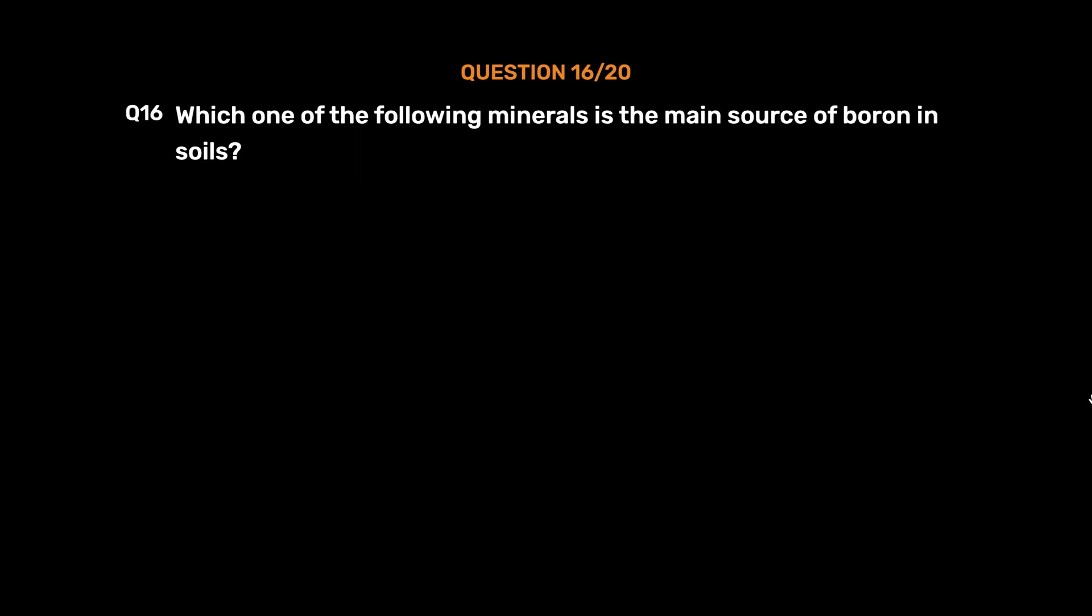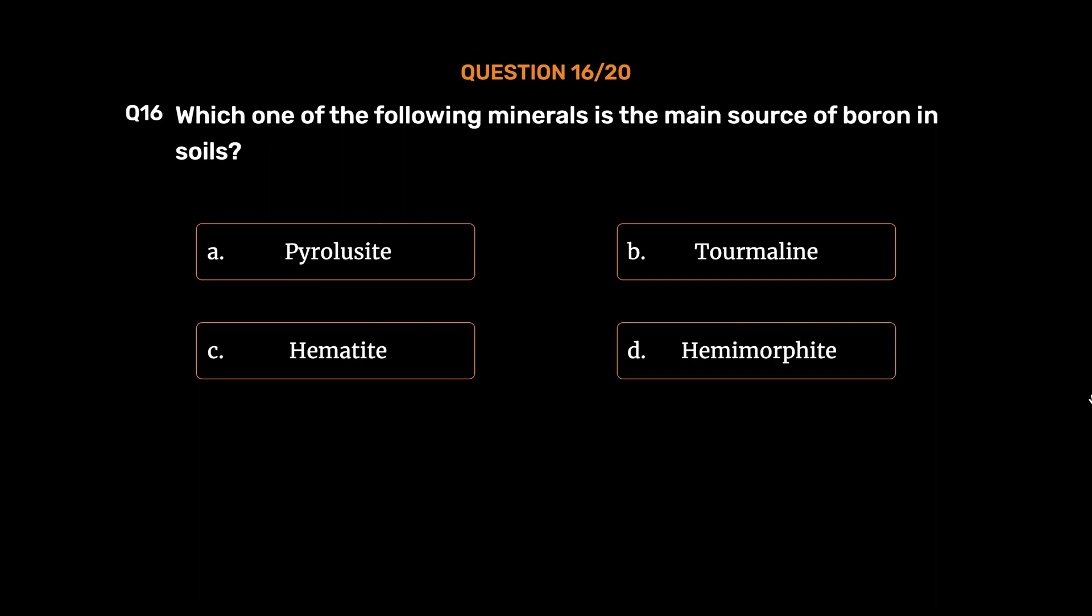Question number 16. Which one of the following minerals is the main source of boron in soils? Option A, Pyrolusite; option B, Tourmaline; option C, Hematite; option D, Hemimorphite. The correct answer is option B, Tourmaline.